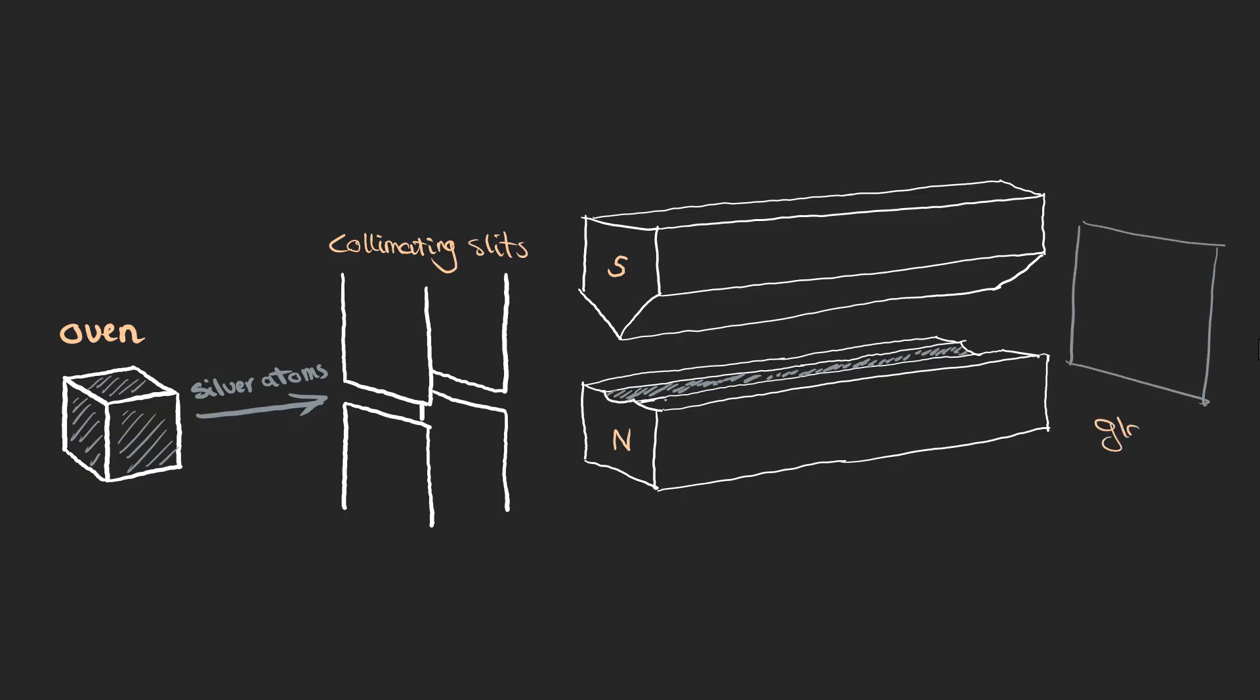First, they ran the experiment without turning on the magnetic field just to see what would happen. As expected, the beam of silver atoms sailed straight through the apparatus without any deflection leaving a single clear line on the glass plate as you can see and this simple test confirmed that the beam was perfectly aligned and that any changes they would see later would be purely due to the magnetic field.